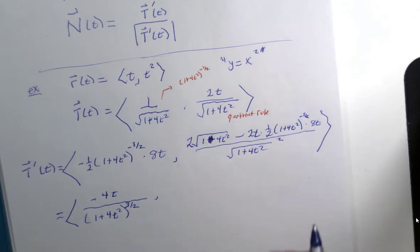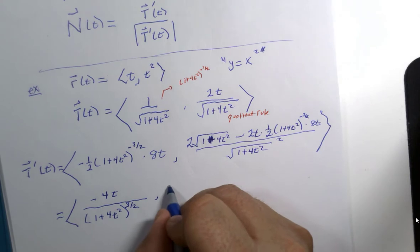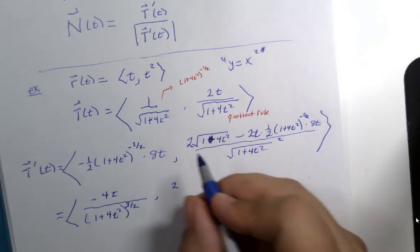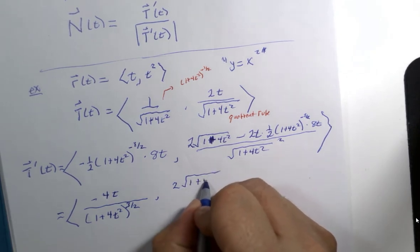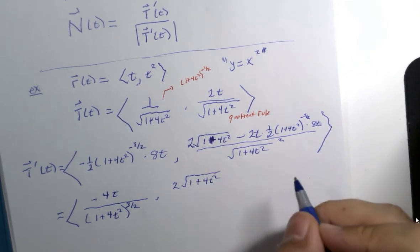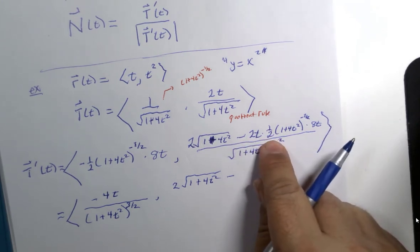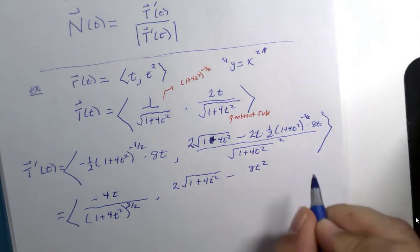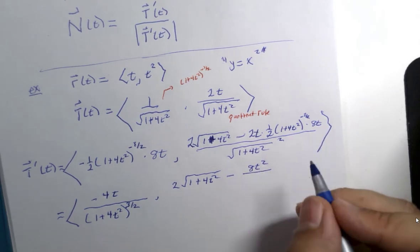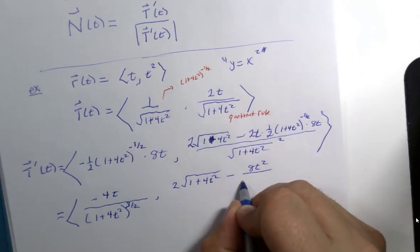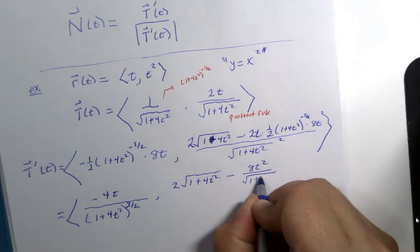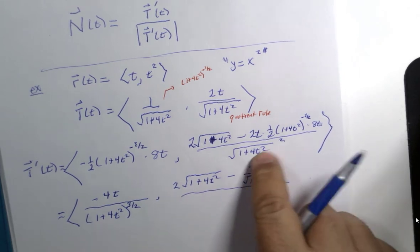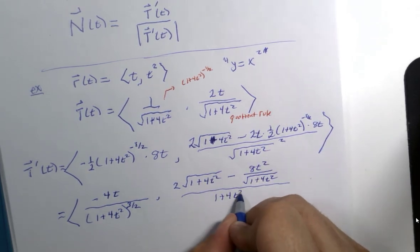And then this is going to be 2 multiplied by the square root of 1 plus 4t squared minus 8t squared divided by the square root of 1 plus 4t squared, that's the negative half power, all over when you square this, 1 plus 4t squared.